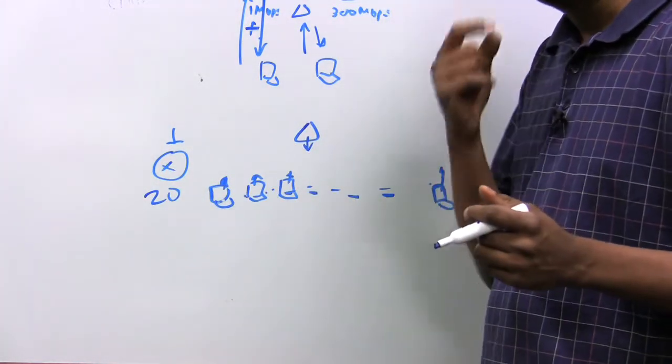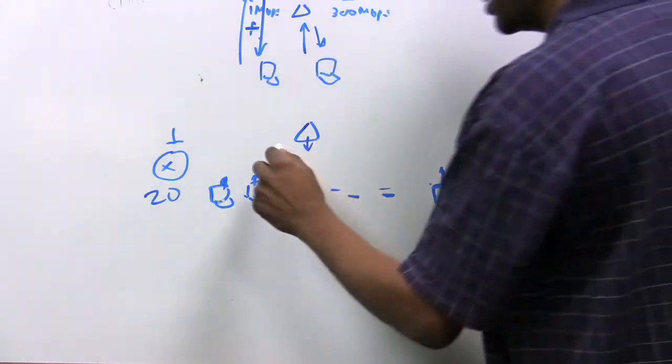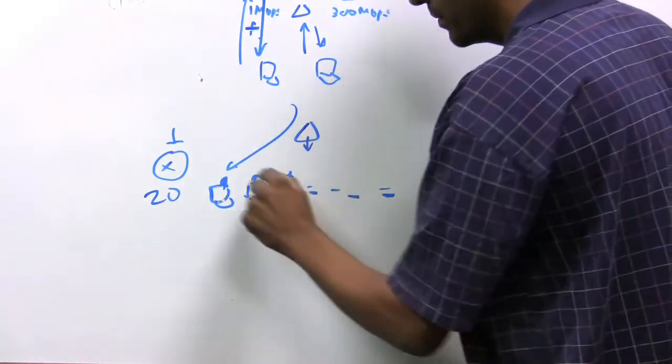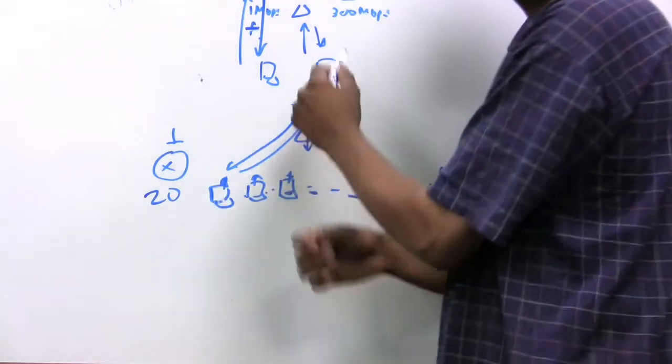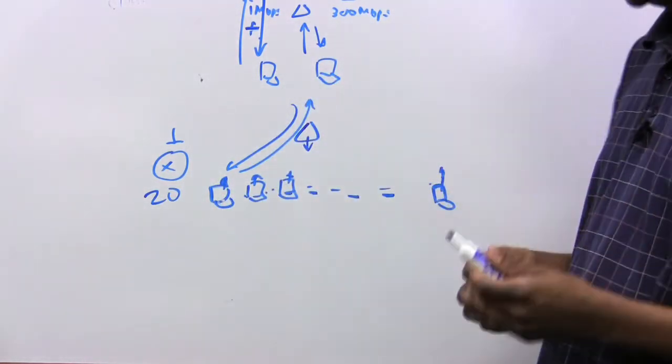But in terms of the transmission, what happens? Most of the transmission is either downlink or uplink. In fact, all of the transmission is either downlink or uplink. Most of the transmission, in fact, is downlink.